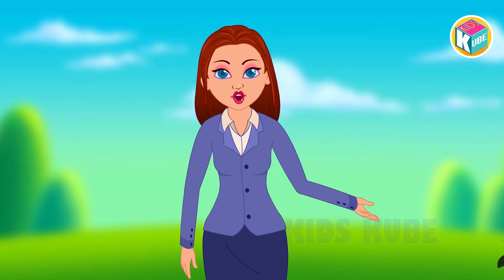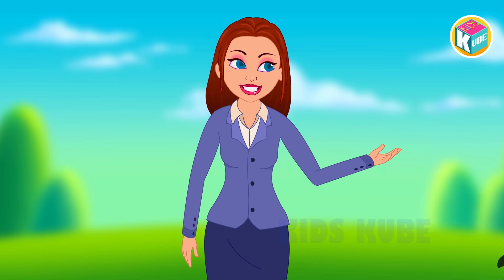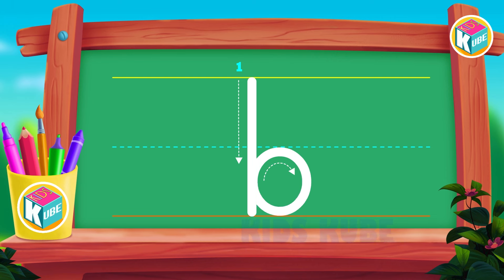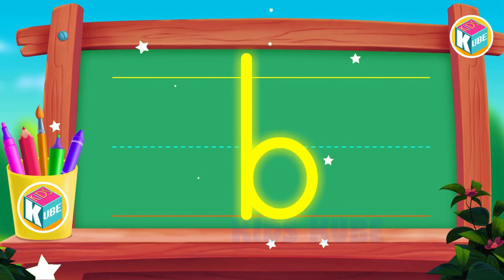Now we will learn the small letter B. First, draw a straight line from the first line to the third line. And push up to middle, after draw from middle circle forward. Wow, this is the small letter B.